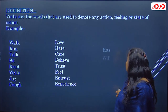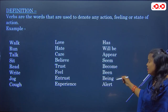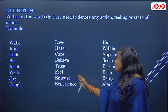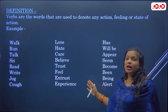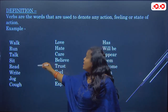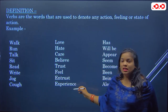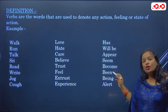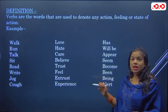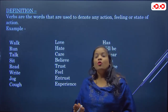Then there are words like has, will be, appear, seem, become, been, being — all these show the state of any action. So from these three sets of examples it is clear: a verb can be the name of an action, the name of a feeling, or a state of action. These three things make up a verb. Even 'being' is a state of action.